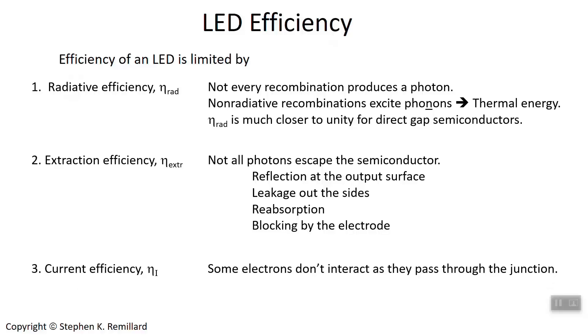And then finally, there's the current efficiency, meaning you're biasing the diode. So you're sending some current through it. But not all of the electrons that go in come out as photons.